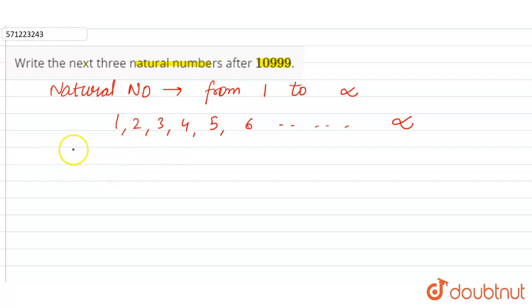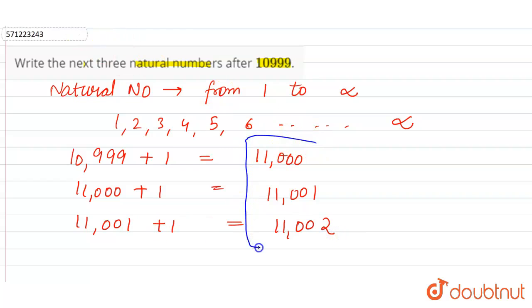So 10999 plus 1 is 11000, 11000 plus 1 is 11001, 11001 plus 1 is 11002. So these are the three natural numbers after 10999.